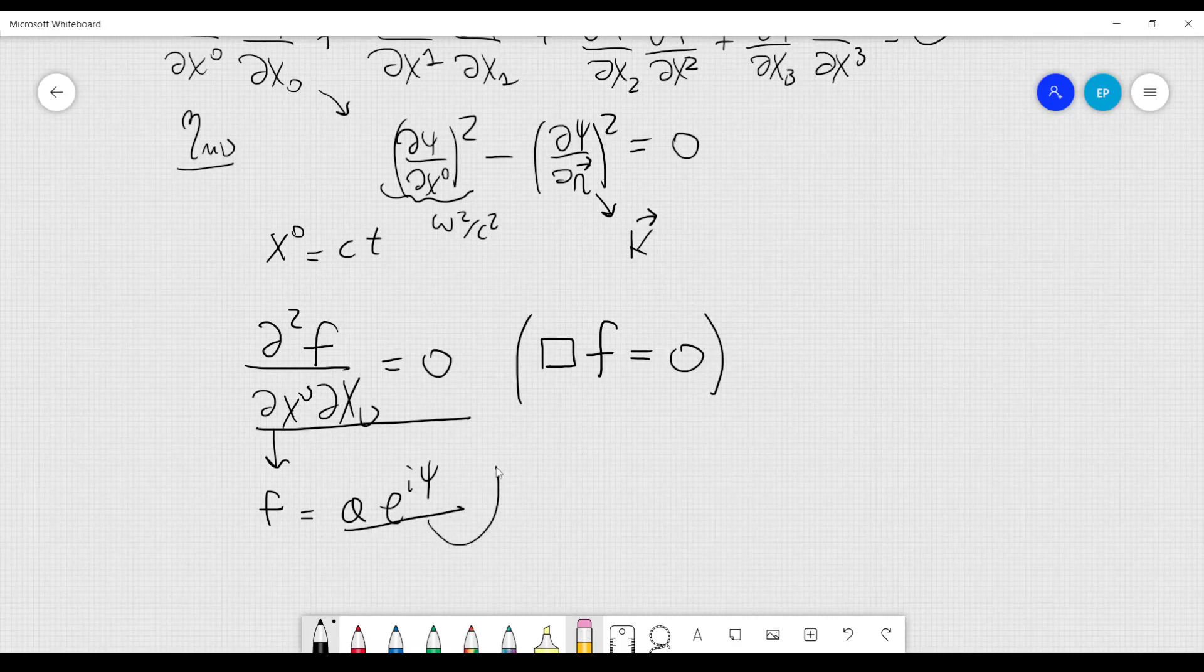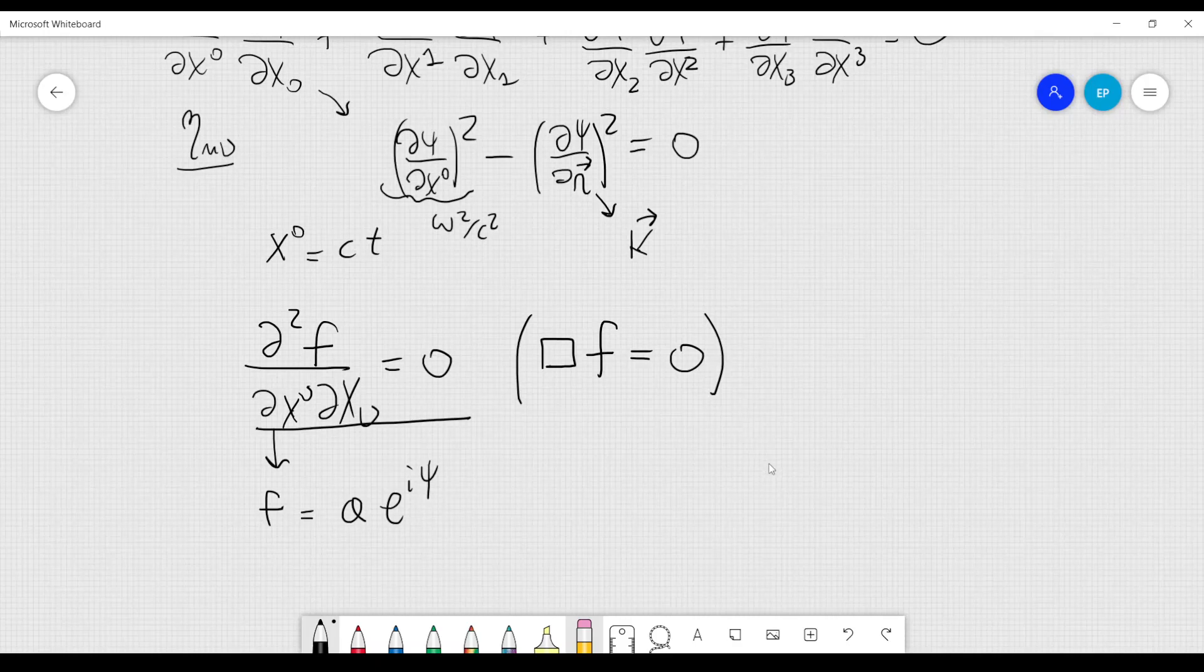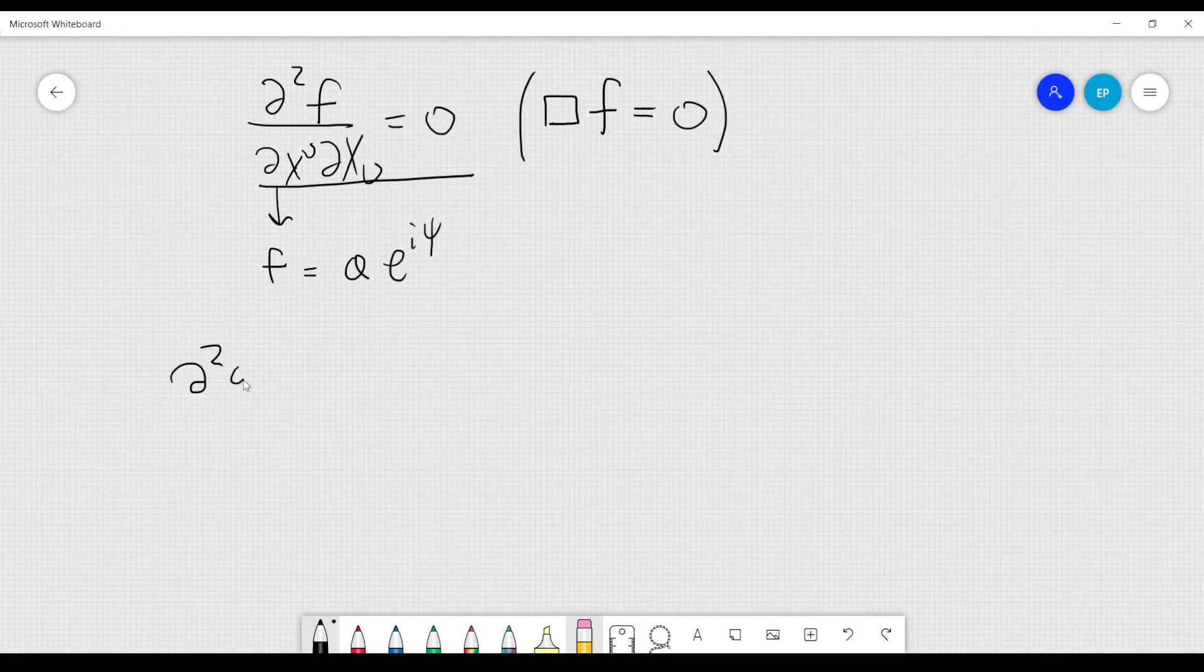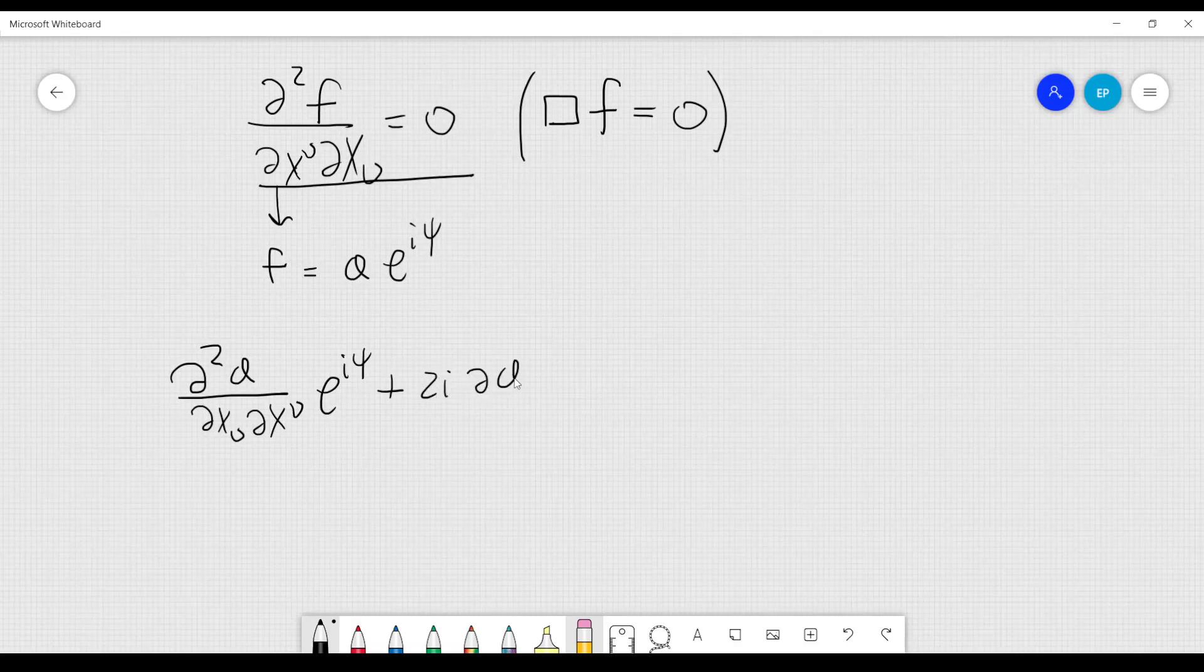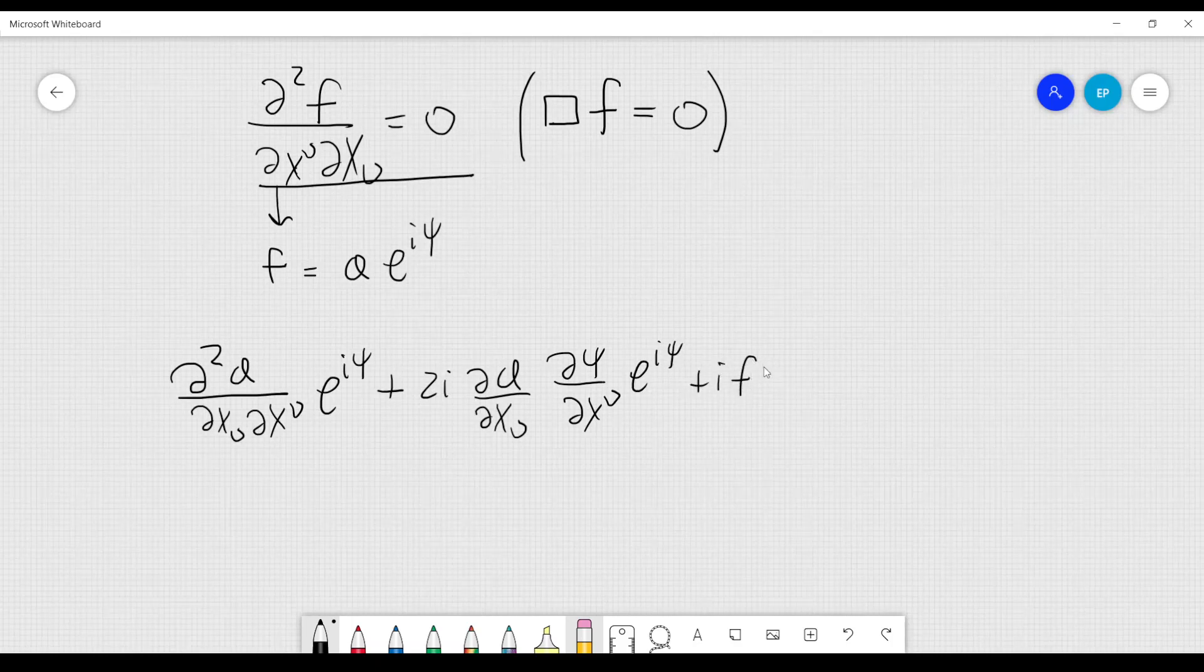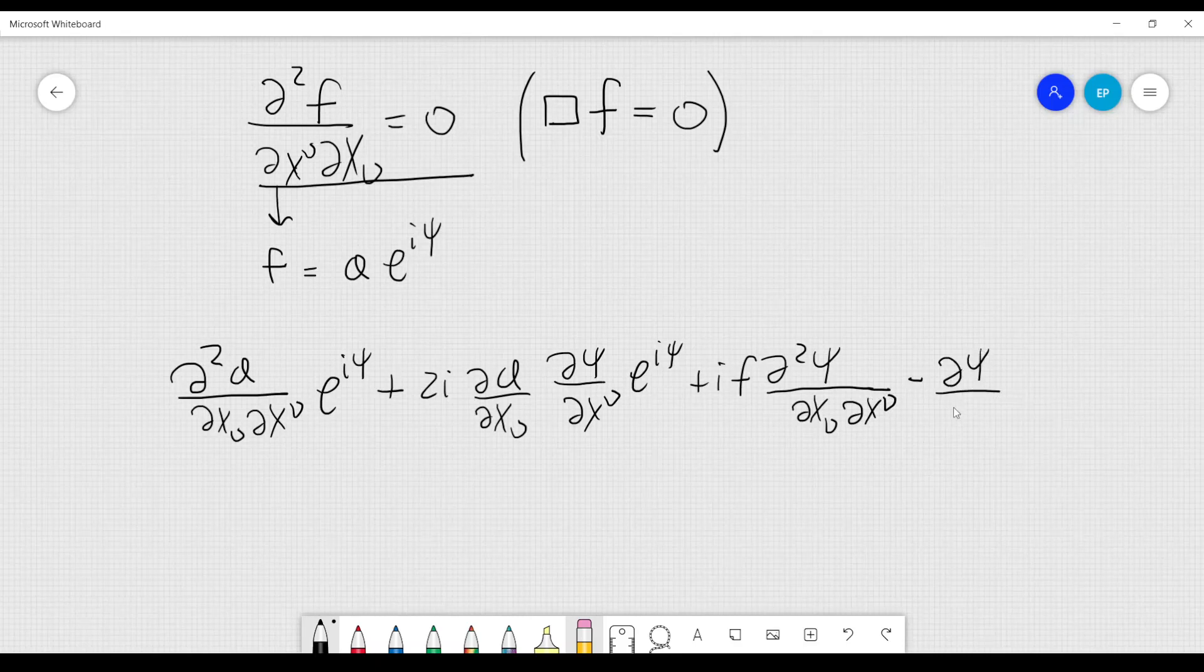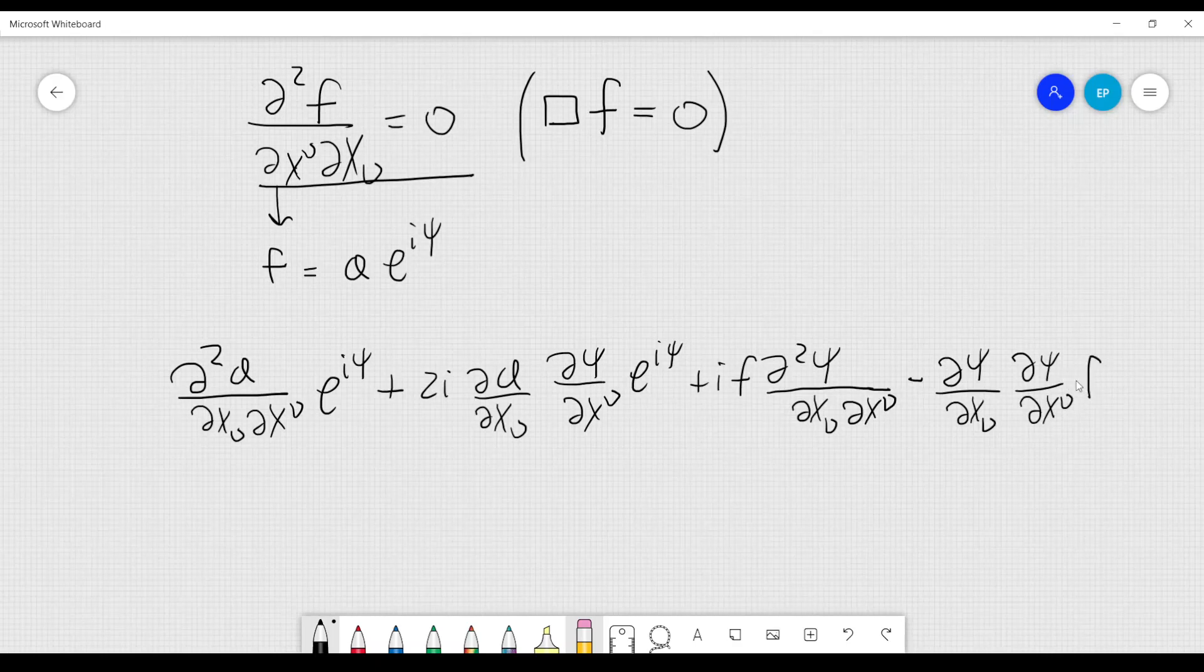So, if you take those two derivatives, you can rewrite this expression here. Here, del squared a over dx nu dx nu times e to the i psi plus 2i dA over dx nu d psi over dx nu. So, e to the i psi plus i f del squared psi over dx nu dx nu minus d psi over dx nu d psi over dx nu times f equal to 0.